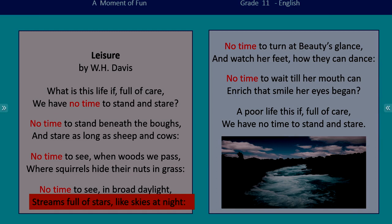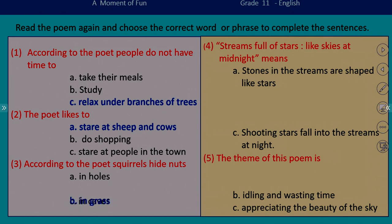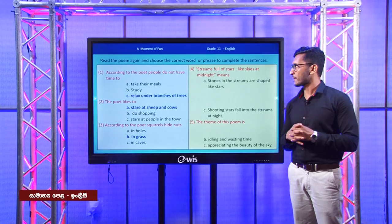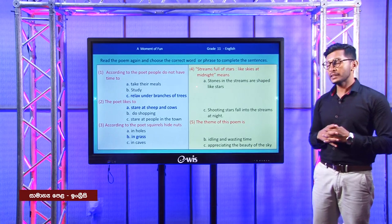When it comes to the third question, according to the poet, squirrels hide nuts. We have the same line in the poem: 'we have no time to see where squirrels hide their nuts in grass.' So we have the answer: in grass. Let's see the fourth one.